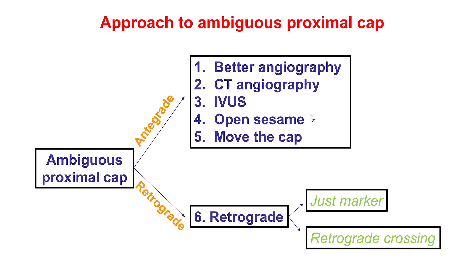So what can we do for lesions that have an ambiguous proximal cap? I've broken this down to six potential solutions: better angiography, CT angiography, IVUS, the open sesame technique, move the cap techniques, and the retrograde approach.